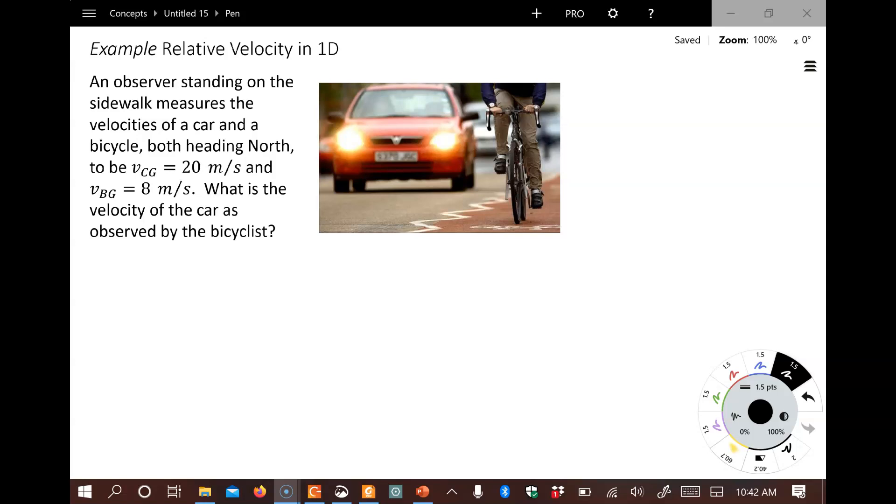And so you see in this problem we've got two objects that are in motion with respect to an observer who's measuring their motion being at rest on the ground. Pause for a second and see if you can solve this problem. What is the velocity of the car as observed by the bicyclist?